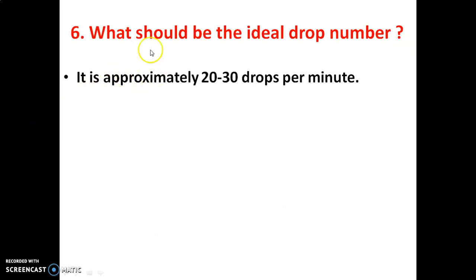What should be the ideal drop number during the experiment? That is the drop count method. The ideal adjustment is approximately 20 to 30 drops per minute.